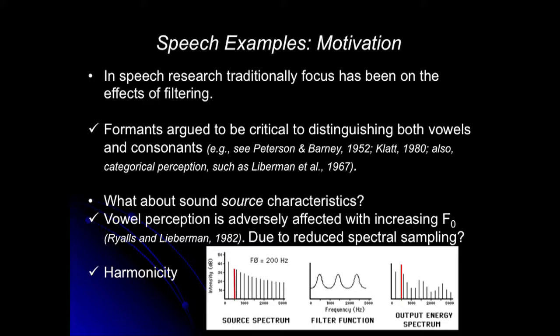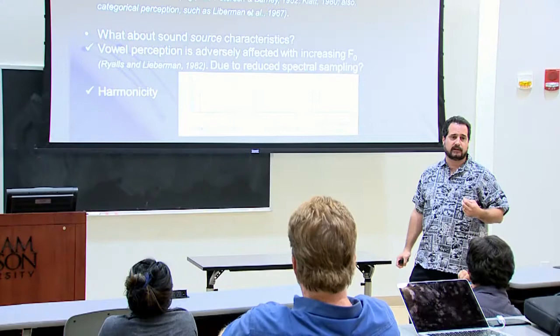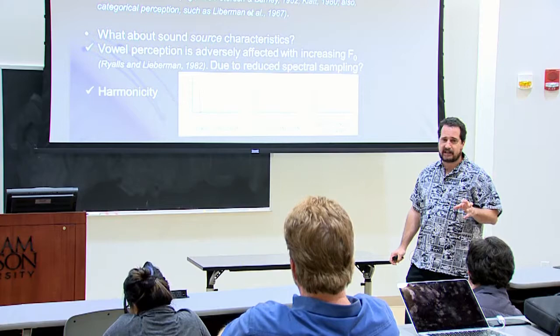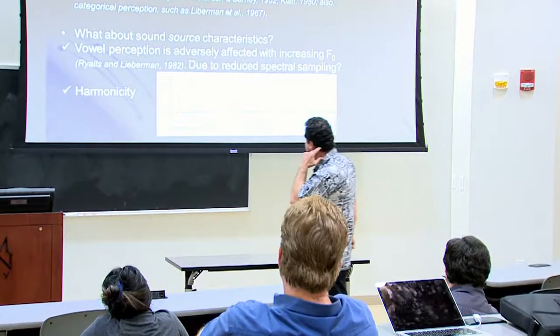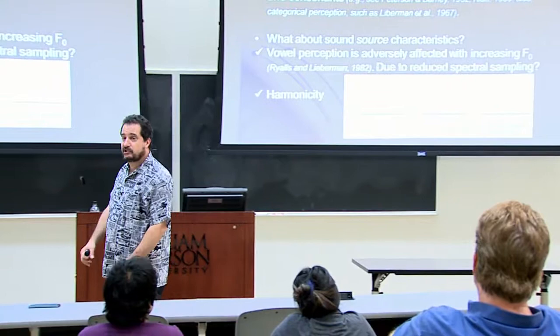The speech example I'm going to tell you about today looks at a slightly different prediction from source-filter theory. We've spent a lot of time focusing on formants being important for speech — that's what speech researchers for the last half-century have really focused on. Filter it a particular way, you hear a speech sound. The original tone from the vocal folds just sounds like a buzz. But what about the source characteristics? What about what's going on with the vocal folds? How does that interact with the filter? It's not responsible by itself, but it's going to modify which frequency information is allowed to come out because it's what you start with.